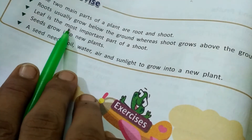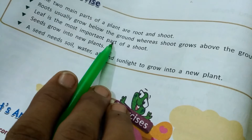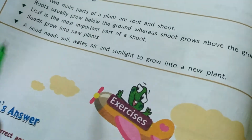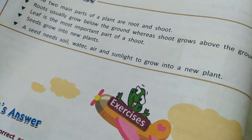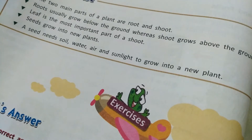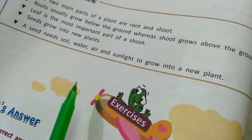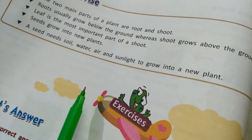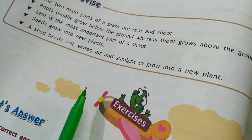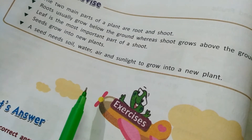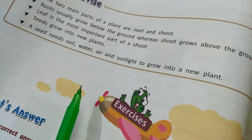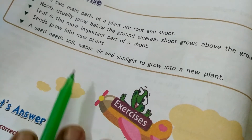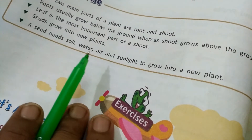The shoot is the part that grows above the ground — that is the stem. The stem bears branches, flowers, and leaves. Leaves are the most important part of the shoot. Why? Because leaves prepare food for the plants. They are the kitchen or food factory of the plant.